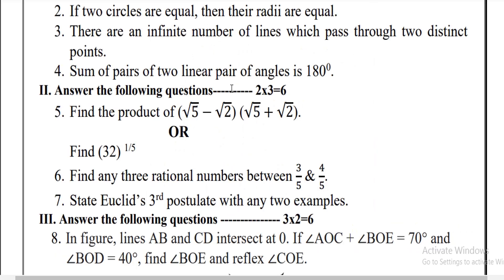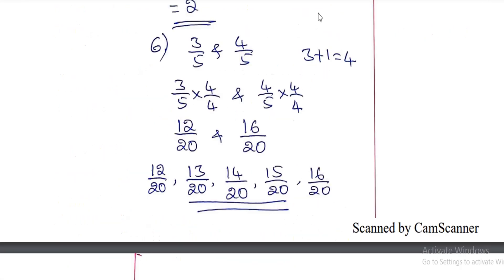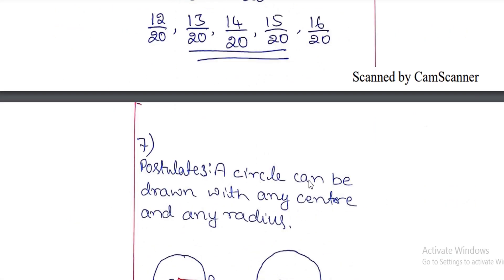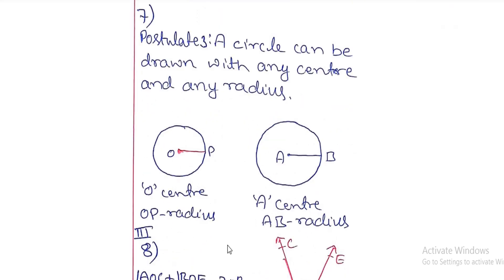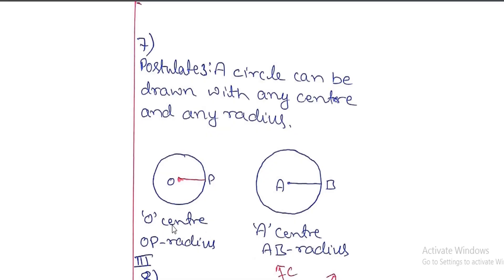Next question: state Euclid's third postulate with any 2 examples. The third postulate says a circle can be drawn with any centre and any radius. Example 1: centre O and radius OP. Example 2: centre A and radius AB. We write circles with any point, any radius and any centre — that gives the answer.